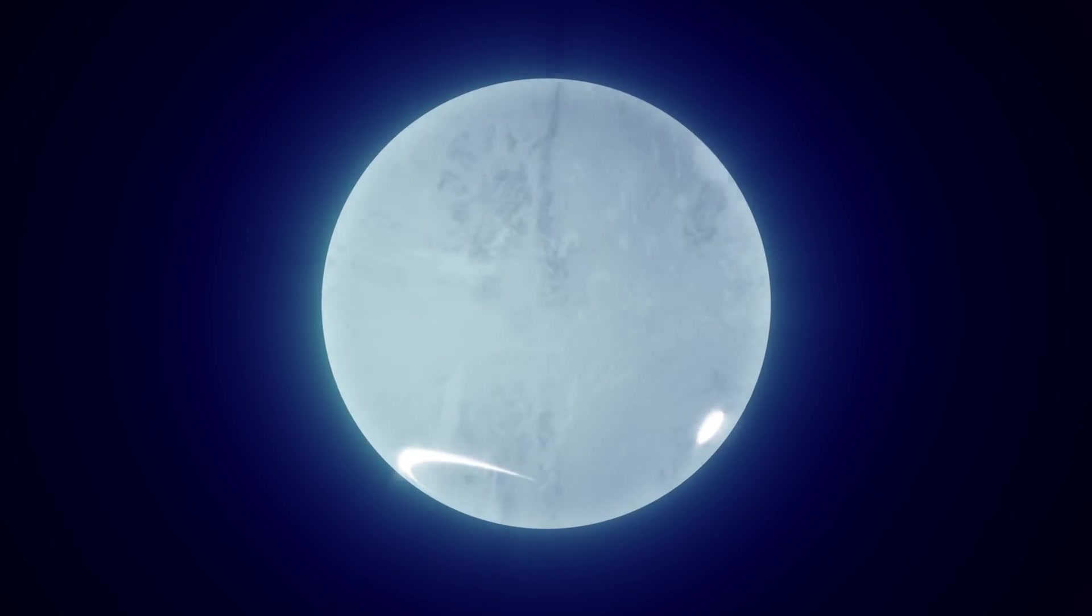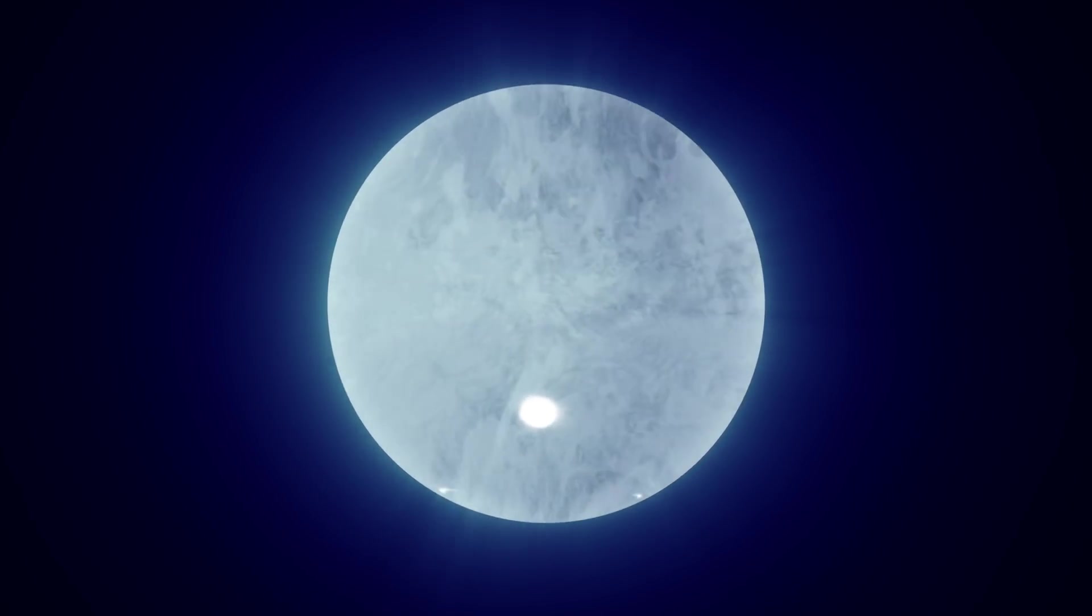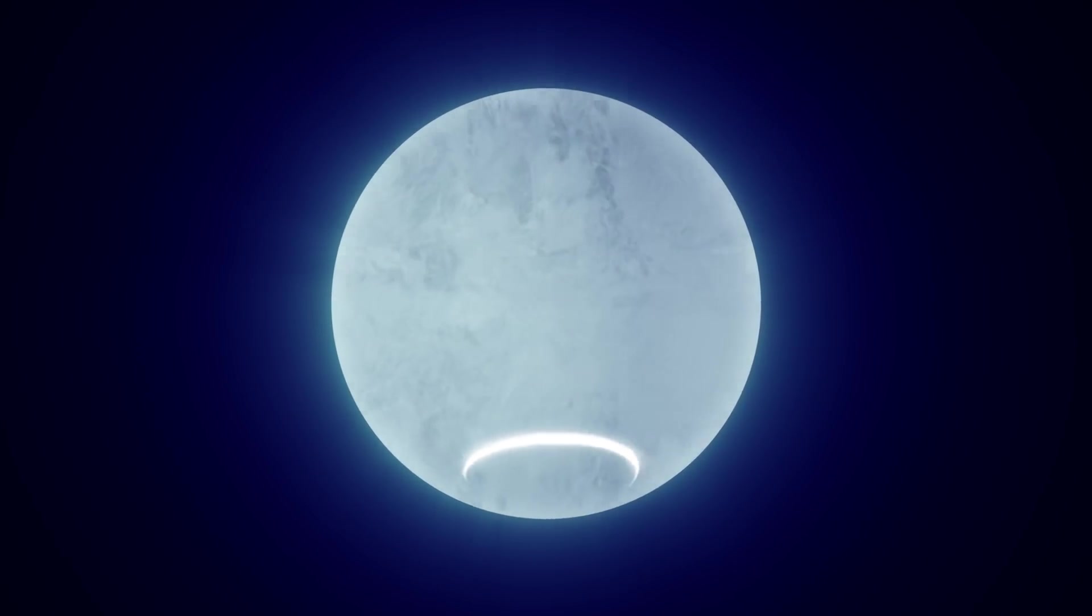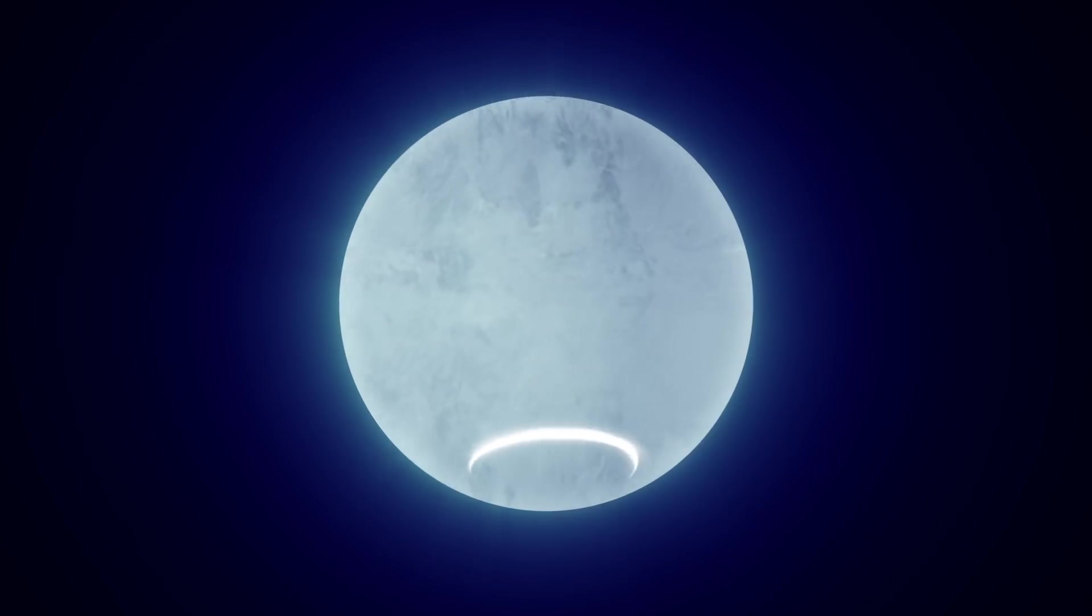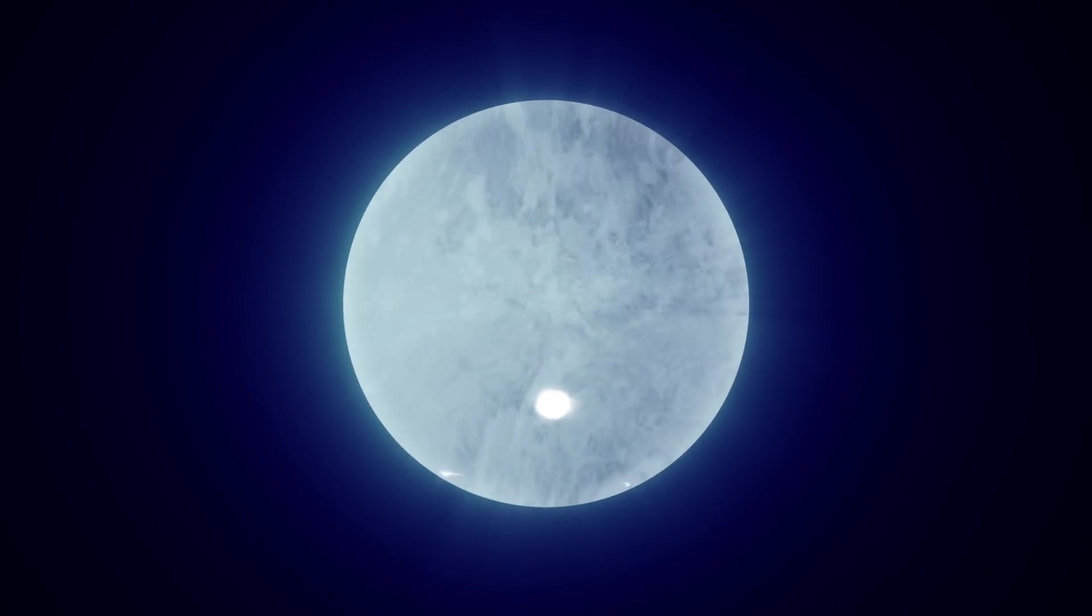A pulsar is so dense that its gravity bends the fabric of space-time around it. NICER's precise X-ray measurements allow scientists to take advantage of this effect to see light from the far side of the pulsar.